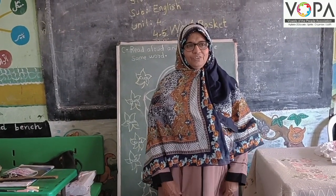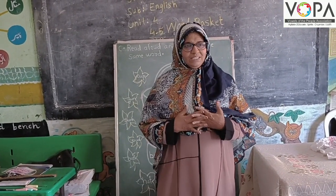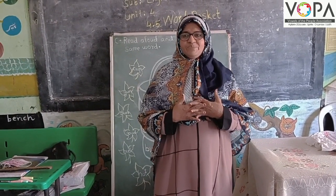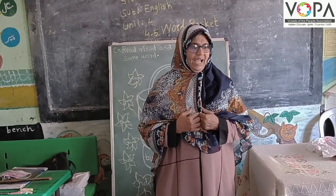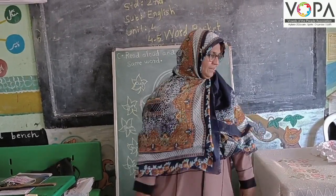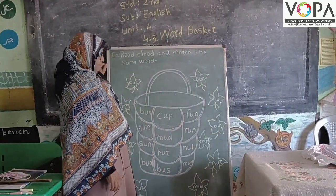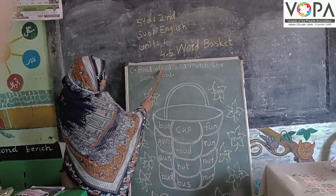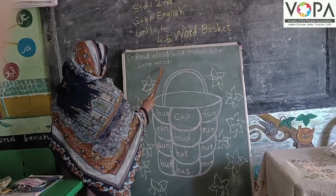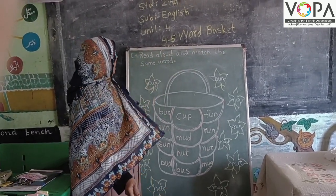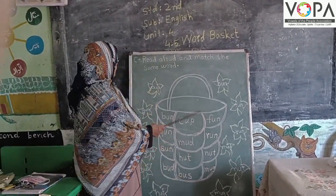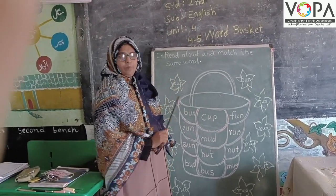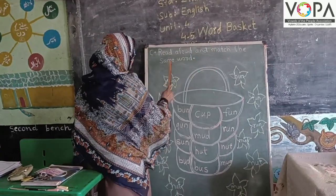Good morning all of you, dear parents and my dear children. Today we are going to learn Standard 2nd Subject English Unit 4, 4.5 Word Basket, Point C. Read aloud and make the same word. Now dear children, here you need to see it — first of all read aloud and make the same words.